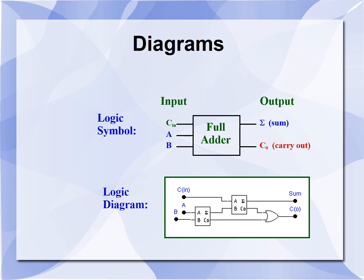The full adder block has three inputs: A and B are two 1-bit binary numbers and C-in is the carry received from the previous stage. When the full adder adds three bits, it produces the sum and carry as shown. You can also visualize the full adder as made up of two half adders. The first half adder adds two binary digits A and B, and the sum output is given to the second half adder. Another input C-in is also applied to the second half adder, producing a sum output which is A XOR B XOR C-in.